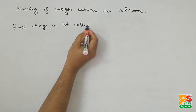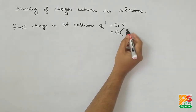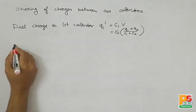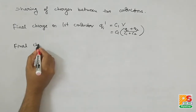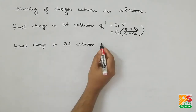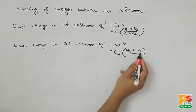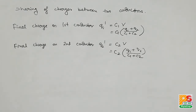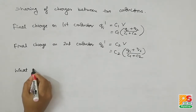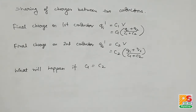Now the final charge on the first conductor is Q1 dash equals C1 times V, and substituting the value of V gives the final charge on the first conductor. Similarly, the final charge on the second conductor is Q2 dash equals C2 times V. You can verify that if we add Q1 dash and Q2 dash, we again get Q1 plus Q2, which follows from the principle of conservation of charge.